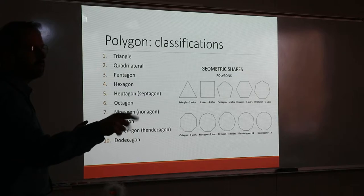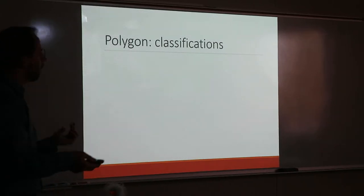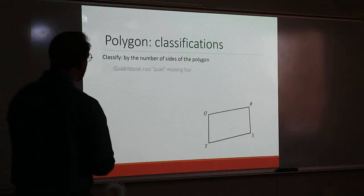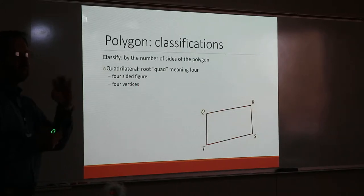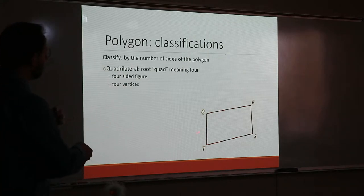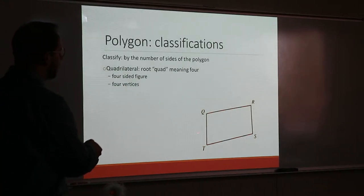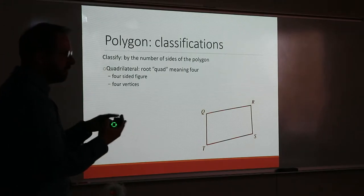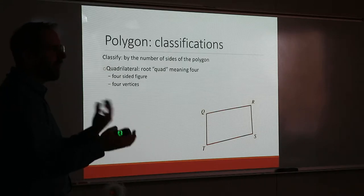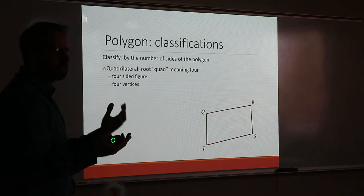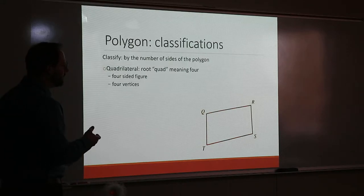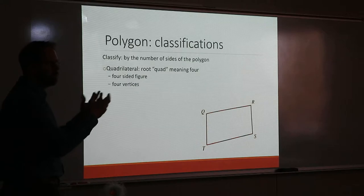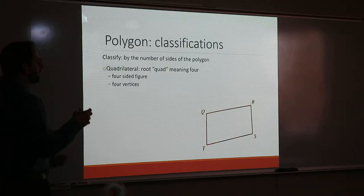Let's talk about quads. A quad has four sides — quad meaning four — four vertices, that type of thing. The sides are also called edges, the vertices are the corners. Remember: capital letters for vertices, lowercase letters for walls. The angles in the corners can use Greek letters like theta and beta, which is what we used in the last chapter when finding angles.